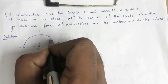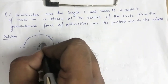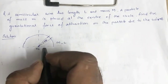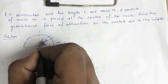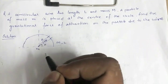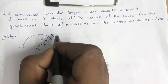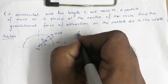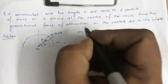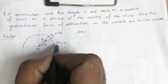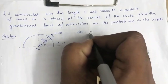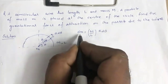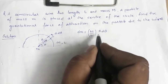We take one small element on this wire. This element is subtending an angle dθ at the center. Let this angle be θ and radius be R. The length of this small element will be R dθ. If dm is the mass of this small element, then dm can be written as: total mass is M, total length is L, so mass per unit length is M/L, and the length of this segment is R dθ. So dm = (M/L) R dθ.